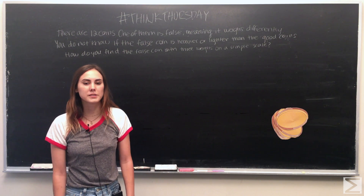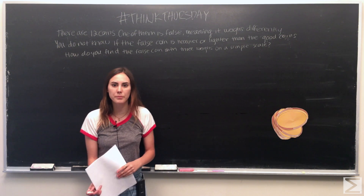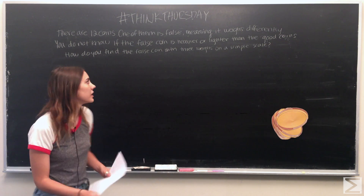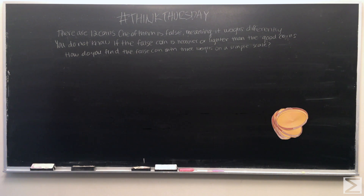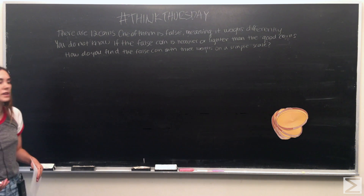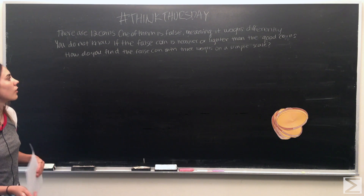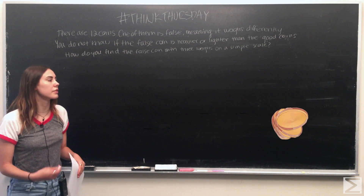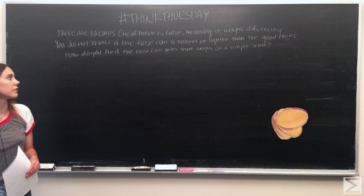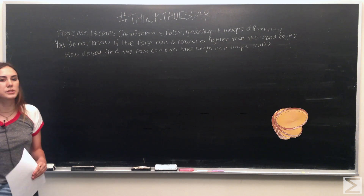Hi, and welcome to the World Wide Center of Math's Think Thursday problem. This week, our problem is: if there are 12 coins and one of them is false — meaning that it weighs differently — and you don't know if the false coin is heavier or lighter than the good coins, how do you find the false coin with three weighings on a simple scale?